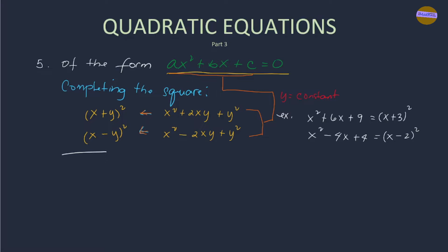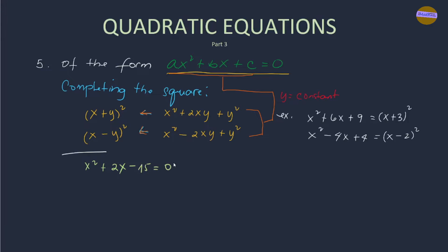Let's say we have x² + 2x - 15 = 0 as our quadratic equation. To complete the square of the left side, we must separate the terms that have a variable from the constant term. We transfer the constant -15 to the other side of the equation, so it becomes x² + 2x = 15.